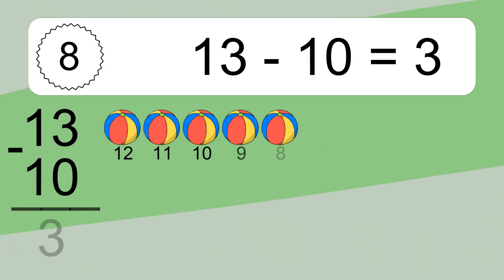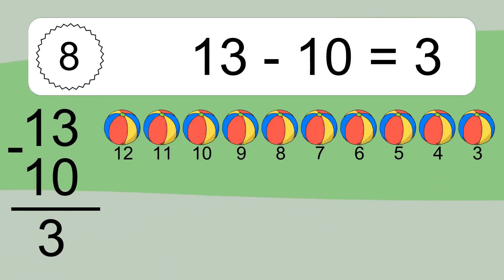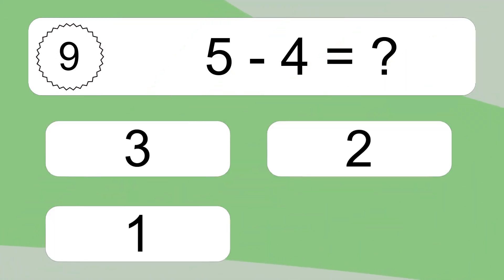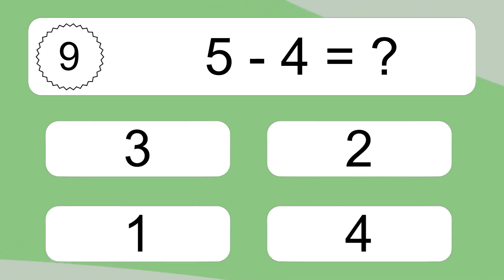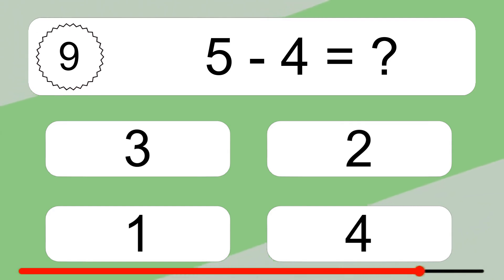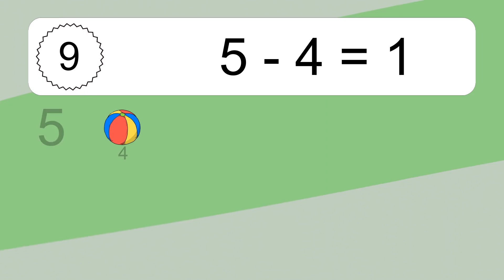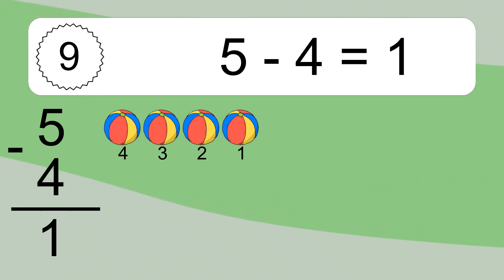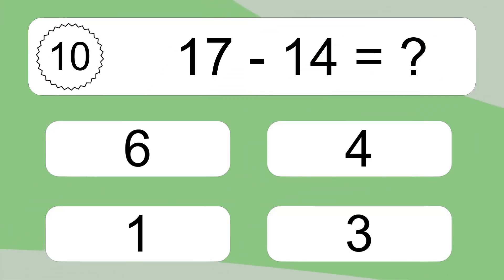13 minus 10 equals 3. Let's count it! 12, 11, 10, 9, 8, 7, 6, 5, 4, 3. 5 minus 4 equals what? 5 minus 4 equals 1. Let's count it! 4, 3, 2, 1.